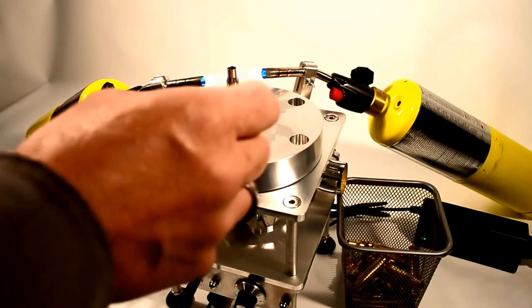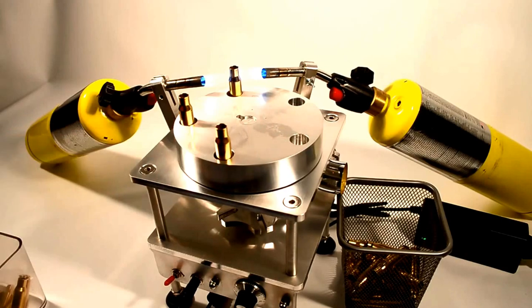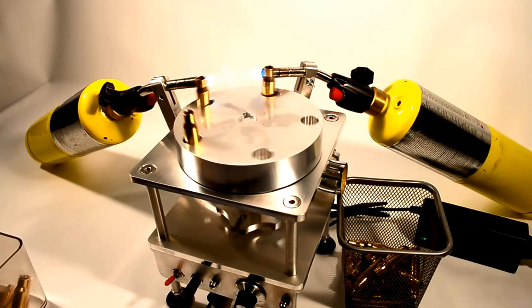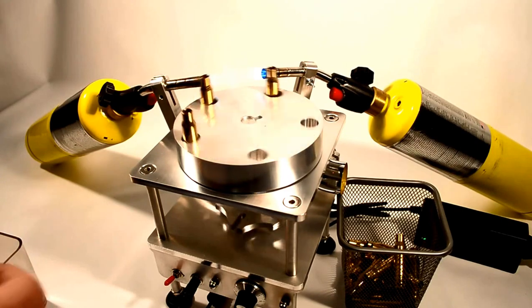You'll notice that the case is being rotated as it's being annealed to make sure we have a nice, even annealing process all the way around the case, using two torches to also enhance that process.